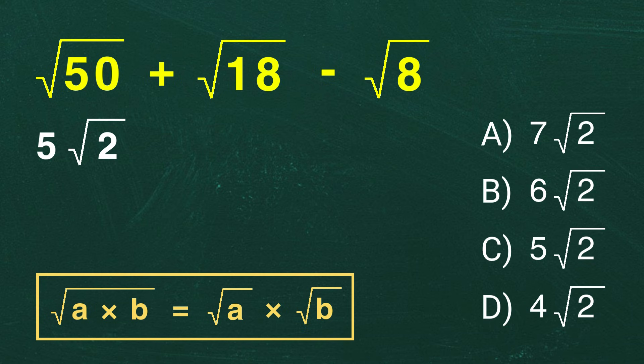Great. Let's move on to the square root of 18. 18 can be factored as 9 times 2. Using the same rule, we split it as the square root of 9 times the square root of 2. And since the square root of 9 is 3, this becomes 3 root 2. Perfect.